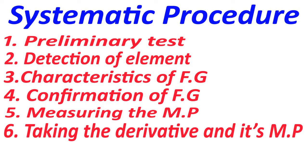How will we find that the derivative or the compound has the correct melting point? Because we will be given a melting point table, and from that melting point table we have to match the melting point we determined experimentally. When the melting point of the derivative matches, we 100% confirm the identity of the given compound.